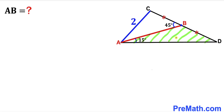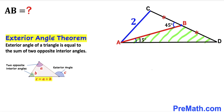Here's our very first step. Let's focus on triangle ABD and recall the exterior angle theorem: the exterior angle of a triangle is equal to the sum of the two opposite interior angles. In our case, this 45 degrees is our exterior angle and these two angles are the opposite interior angles. So therefore we conclude that this angle has got to be 30 degrees, such that the two interior angles add up to 45 degrees.